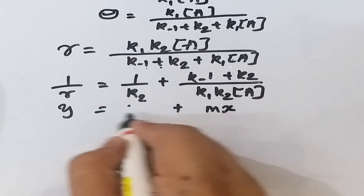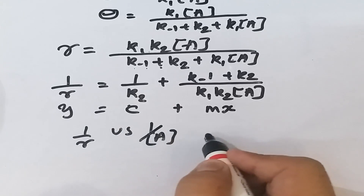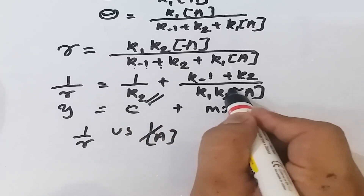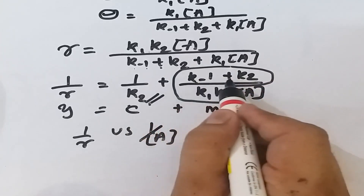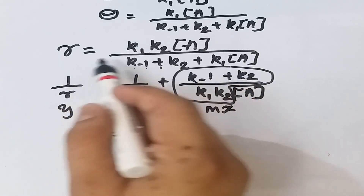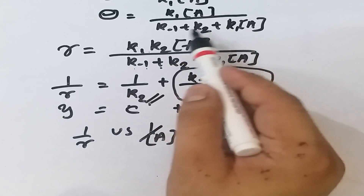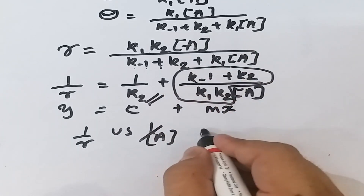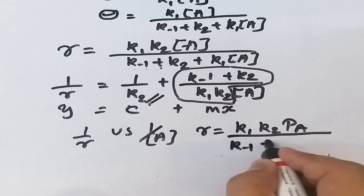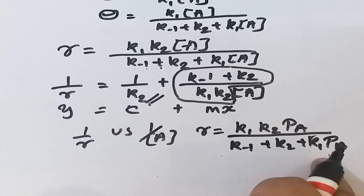Since we are dealing with gases, concentration can be replaced by partial pressure pₐ. The rate expression becomes r = k₁k₂pₐ / (k₋₁ + k₂ + k₁pₐ). This equation gives the rate for a unimolecular heterogeneous catalytic reaction.